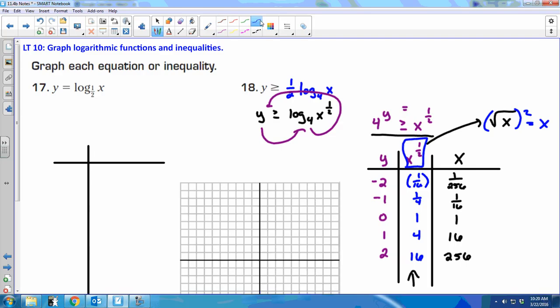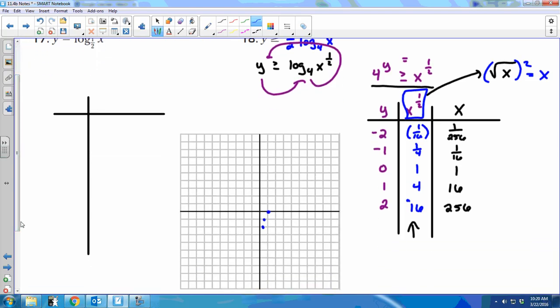Then I'm just going to graph all these points. So 1 over 256, negative 2. So it's really close to 0. 1 over 16, negative 1. 1, 0. 16, 1 is somewhere way out here, right? Is this inequality supposed to be dotted or solid? Solid. Make sure you're paying attention to that. We're never going to cross the y-axis on this one because we keep getting those fractional values every time you put a new value in for y. Any questions about that?